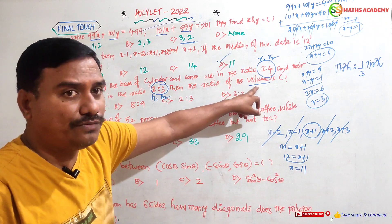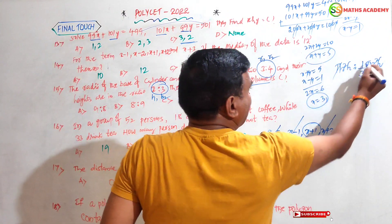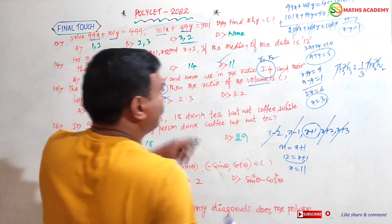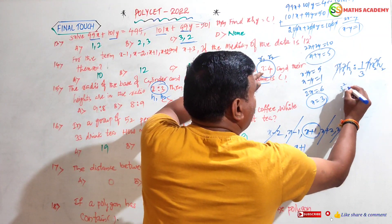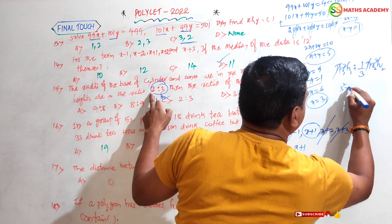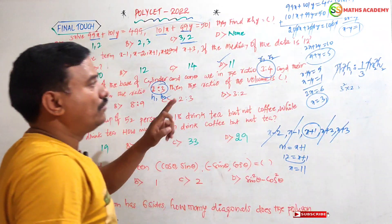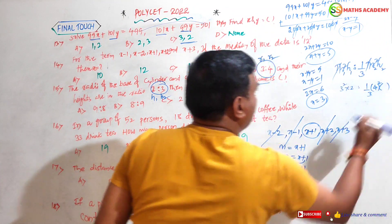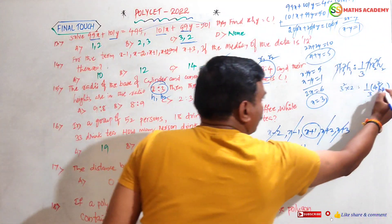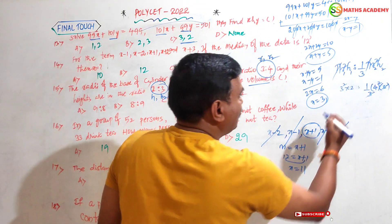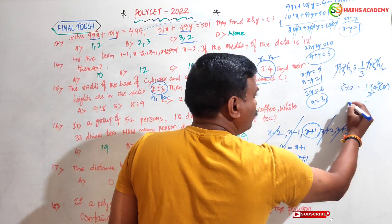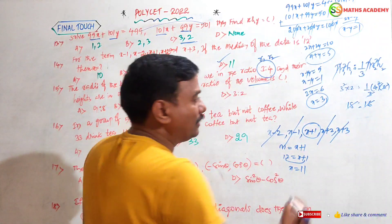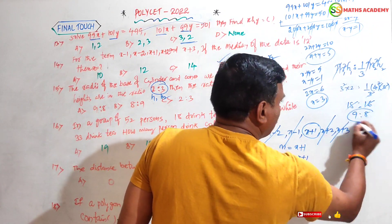Ratio of their volumes: π cancels out. Volume of cylinder / Volume of cone = r1² × h1 / ((1/3) × r2² × h2). Substituting r1 = 3, r2 = 4, h1 = 2, h2 = 3: we get 3² × 2 / ((1/3) × 4² × 3) = 9 × 2 / (16) = 18/16, which simplifies.